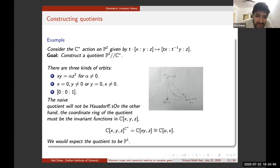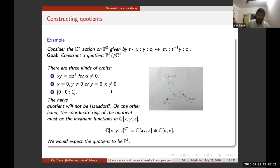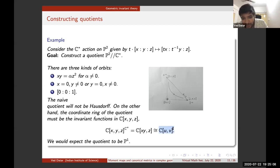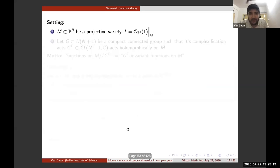Consider the coordinate ring of ℙ², which is the polynomial ring in three variables. The motto is that functions on the quotient M/G_ℂ should be G_ℂ-invariant functions on M. Looking at the G-invariant functions, one finds they are isomorphic to the polynomial ring in two variables—the coordinate ring of ℙ¹—so one expects any reasonable quotient to be isomorphic to ℙ¹.